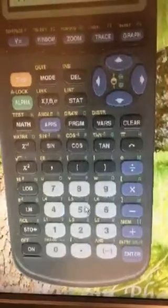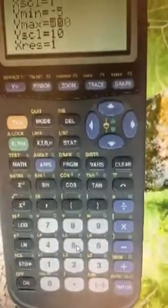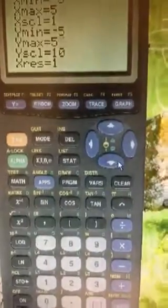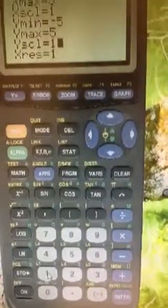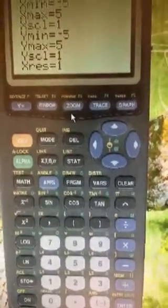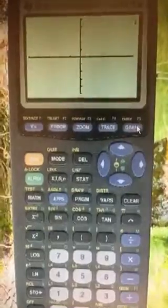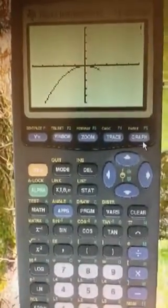And now I'm going to go to my y axis and do the same thing. So I'm going to type in negative five. Come down. I'll put in five. And then my scale is one. And then the residual means what the points count by. So we're going to leave that as one. Now notice there's a graph key. We're going to push graph and we should see a graph of what we're trying to find.